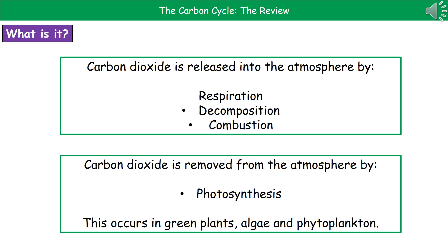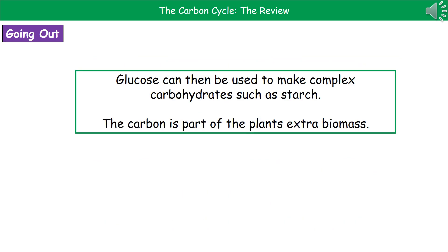There is only one process by which carbon dioxide is removed from the atmosphere, and that is photosynthesis. Photosynthesis takes place in any green plants, algae and phytoplankton, and it takes that carbon dioxide from the air and combines it with water to make glucose and oxygen. Once we've made that glucose, it can be used to make more complex carbohydrates such as starch, and that carbon becomes part of the plant's extra biomass, which can then be passed on to animals when they feed on the plants.